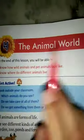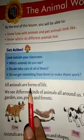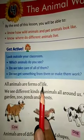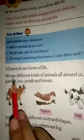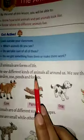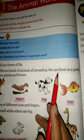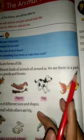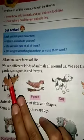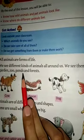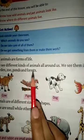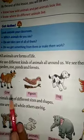Chapter 4: The Animals World. All animals are forms of life. We see different kinds of animals all around us. We see them in a park, garden, zoo, ponds and forest.